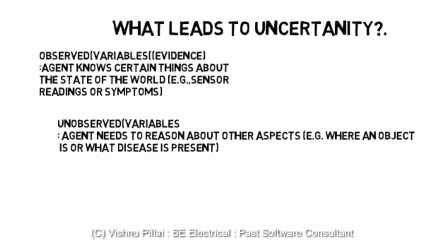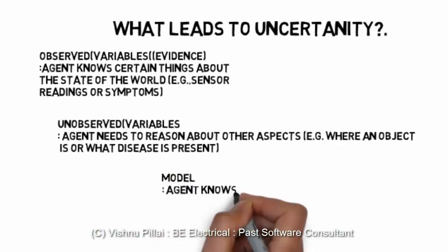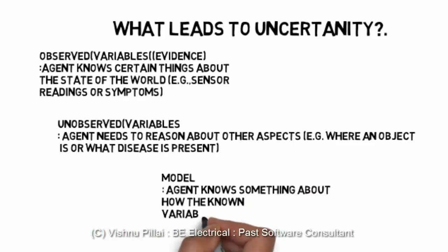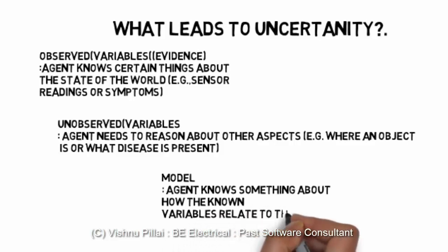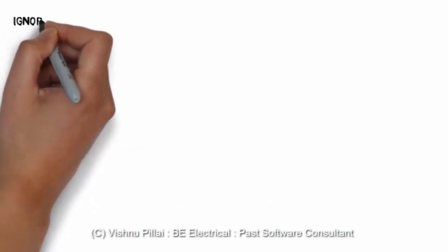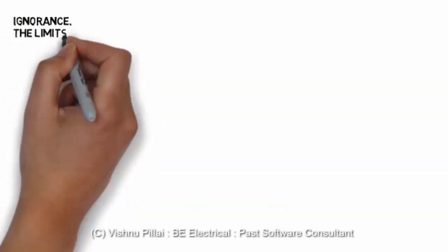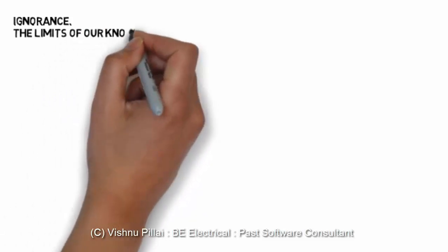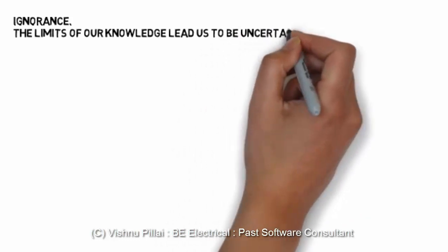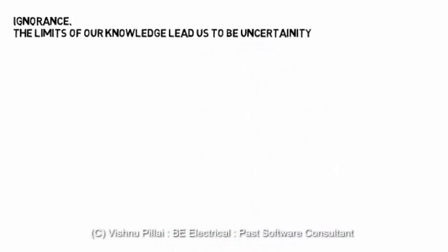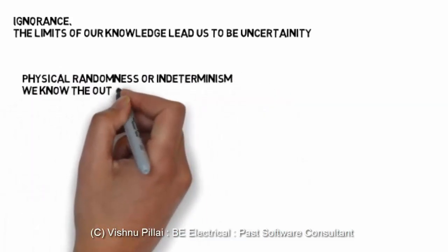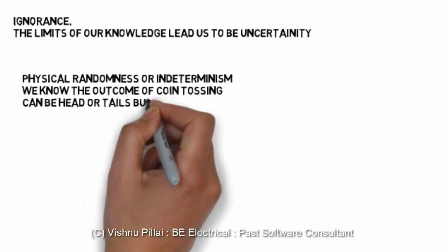There can be two kinds of information. One kind we can clearly define a system around — like a fire system that operates based on detecting smoke, high temperature, or a triggered fire alarm. But under uncertainty, we also need to consider factors like ignorance, which is the limit of our knowledge, and this leads to uncertainty. There will always be some ignorance in real-world systems.